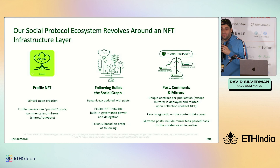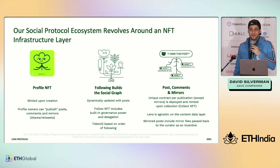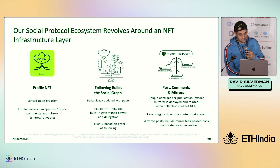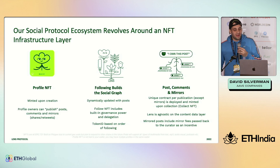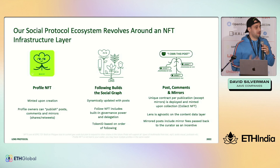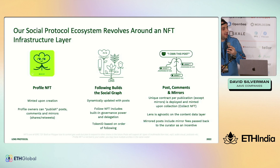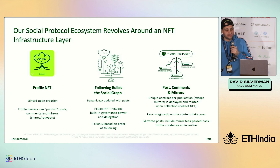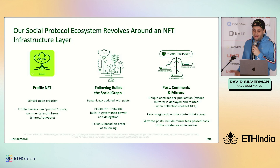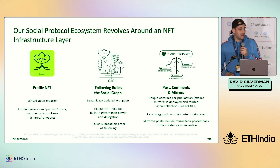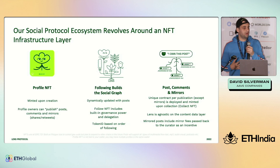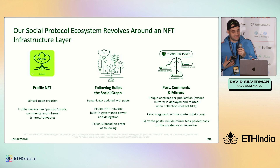Token IDs are based on the order of following. Bradley in the audience was my first follower, Christina was my 10th follower, and that has built-in value if I pop off and they can trade it in the future. Posts, comments, and mirrors are part of my profile NFT — they are part of who I am. As I move around with my profile, so does my content. They have a collect function which allows them to be instantly monetized. I can set the rules for how collect NFTs are minted from a publication, giving me as a creator a way to determine my own monetization logic.